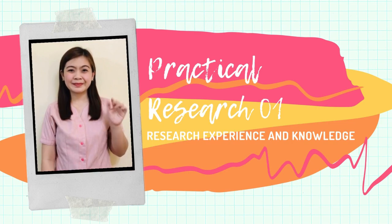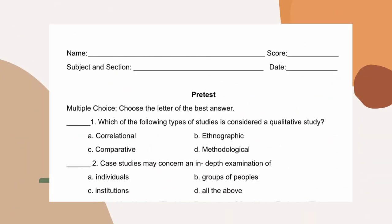Hello, students! Welcome to Week 1 of your Practical Research 1 course. Bring out your supplementary learning material and start with the pre-test. Your pre-test is a 20-item multiple-choice exam which can be found in pages 3 to 6 of your material. Choose the letter of what you think is the best answer.